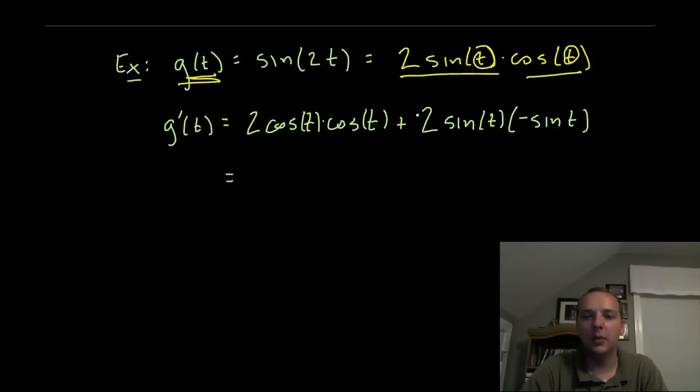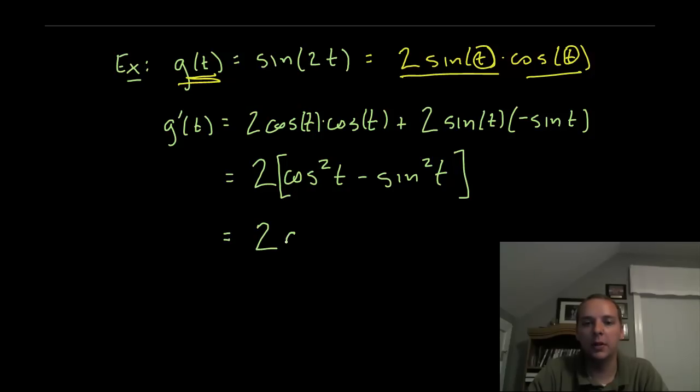Alright, we can clean that up a little bit, we can pull out a common factor of 2, so we'd have 2 cosine squared t minus sine squared t. So if we know our trig identities this should look familiar to us, we have 2 and the expression in the brackets here is cosine 2t.